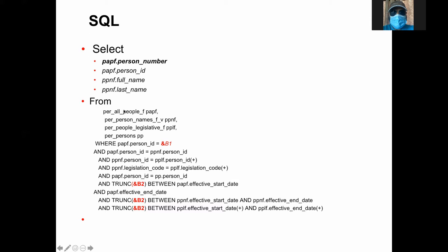Now, these three parts are basically information which is retrieved from one or multiple tables. In this case, we are getting all this information from the person table — this is personal information. We have person number, person ID, full name, last name. These two come from the person table, and these two come from the person name table. This is the information coming out of the database. The FROM clause says where it is coming from — what is the source. In this case, the information is coming from two tables, but using four tables for different validations. The WHERE clause basically tells how to join the tables and what the conditions are.